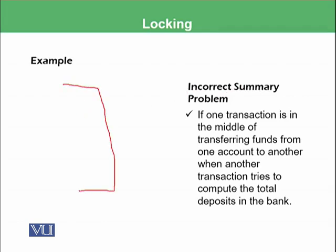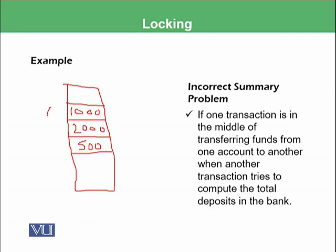Suppose here is an account details of different people having different balances. For example, account A has 1000 as a balance, account B has 2000, and account C has 500. Our transaction is that we want to transfer 500 from account A into account C. So account C will become 1000 and account A will become 500.